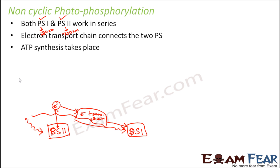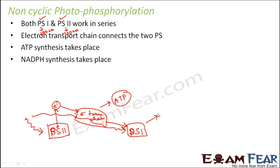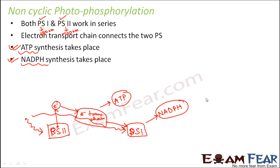The result of this process is that ATP will be produced and NADPH synthesis will also take place. These are the two things produced at the end of non-cyclic photophosphorylation, and that is our aim. So this non-cyclic photophosphorylation is basically the light reaction, and the result is ATP and NADPH. This ATP and NADPH will be utilized in the dark reaction to synthesize sugar.